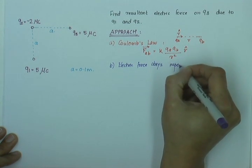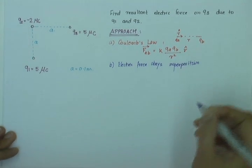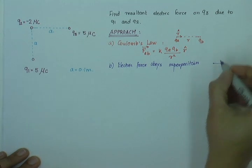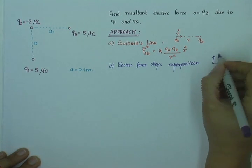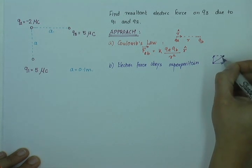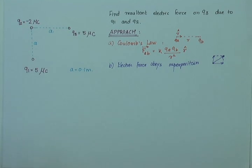And what that means is that if you have two electric forces acting at a point, then the resultant electric force is the vector sum of the two electric forces. So, let us see how we can do that.